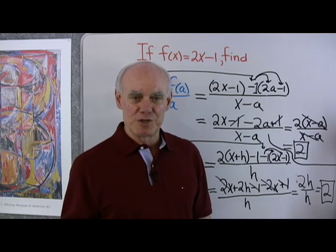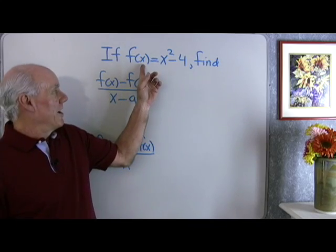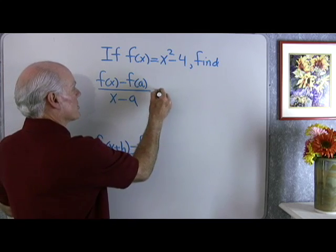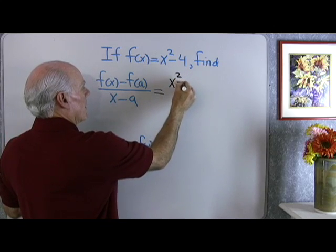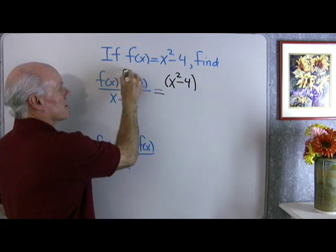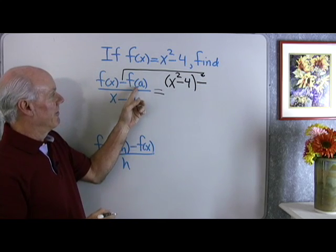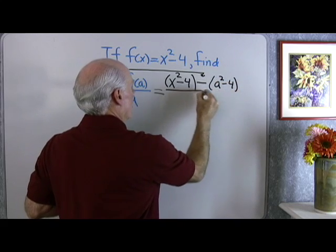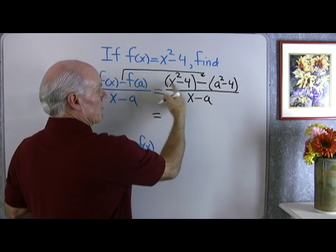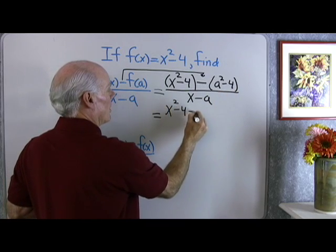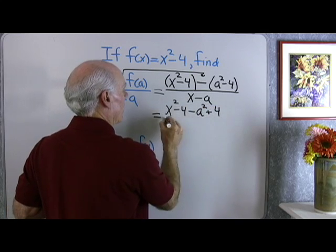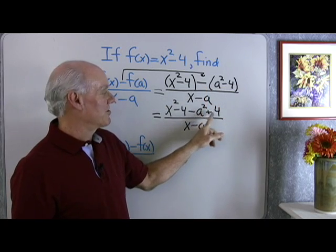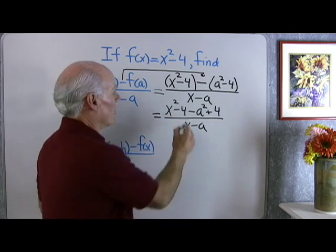This is just practice at using function notation to simplify these expressions. Now I want to do the same two problems with a new function. This time f(x) = x squared minus 4, and I want to find f(x) minus f(a) over x minus a. I'll start with f(x), which is x squared minus 4, in parentheses, then subtract f(a). If f(x) is x squared minus 4, then f(a) is a squared minus 4. That's all divided by x minus a. Removing parentheses: x squared minus 4 minus a squared plus 4, all over x minus a. Because of the negative sign in front, that becomes negative a squared and positive 4. Negative 4 and positive 4 add to 0.